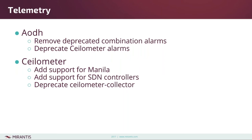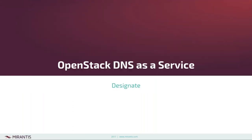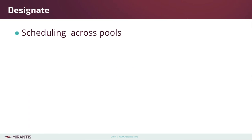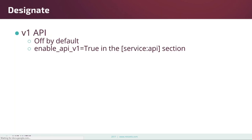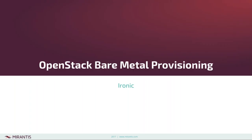The telemetry projects are mostly in maintenance mode at this point. The main additions are some additional support for Manila, the OpenStack file service, and for SDN controllers, along with some deprecations and removals. For Designate, the DNS as a Service project: you can now schedule across different DNS pools using filters. Also by default, the v1 API which is deprecated has been turned off — you can re-enable it by setting 'enable_api_v1' to true in the service API section of your configuration.